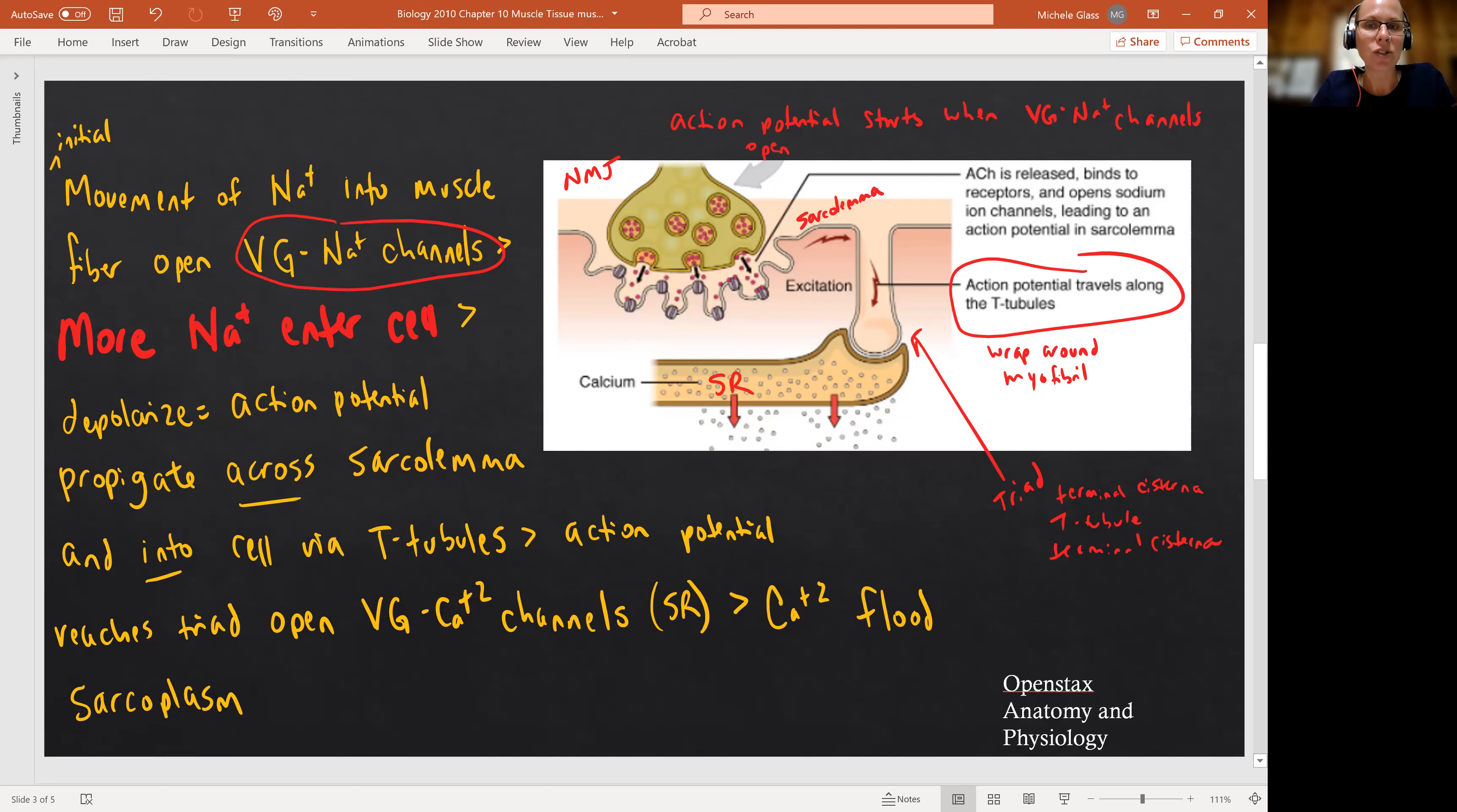And the action potential really is our technical name for the electrical signal that we get or the nerve impulse, however you want to translate that in your mind. It is the opening of the voltage gated sodium ion channels that initiates the action potential.